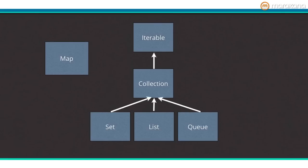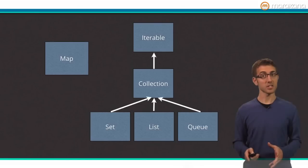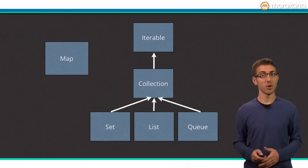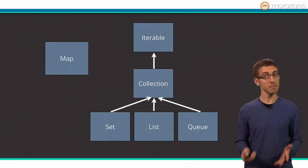First, a bit of taxonomy. The route of Dart's collection classes start at iterable. An object that implements iterable exposes read-only access to a group of items. The collection class extends iterable, adding the ability to add and remove items. The rubber hits the road with the list, set, and queue, which implement collection.